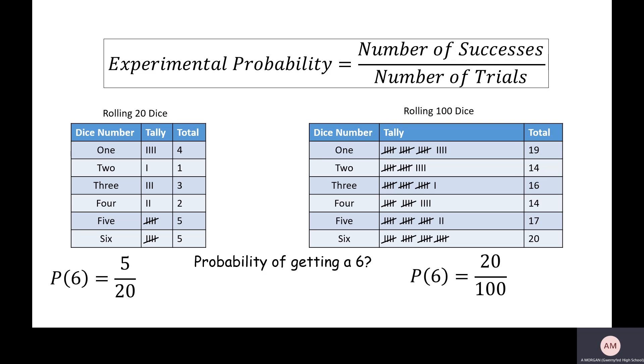And what we know to be true theoretical probability is 1 out of 6. Now those numbers are pretty difficult to compare because they're all different denominators. So if I turn them all into decimals they're going to be easier to compare. So 5 over 20 is 0.25, 20 over 100 is 0.20, and 1 over 6 is 0.17.